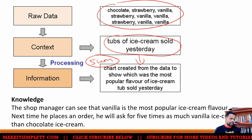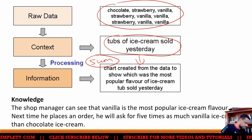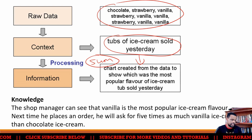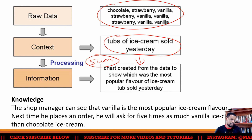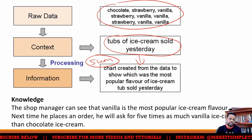The sum creates information and we present it in a chart for people to see. The knowledge you get from it is that the shop manager will see that vanilla is the most popular ice cream flavor, and next time he places an order, he'll ask for five times as much vanilla ice cream as chocolate.